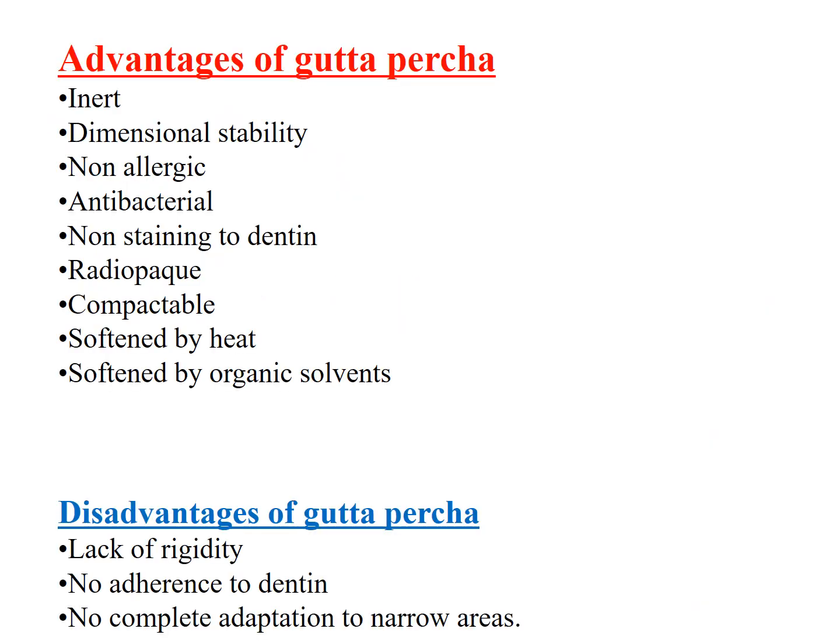Gutta-percha has many advantages: it is inert, does not have any cytotoxic effect, has dimensional stability, no allergy, and has certain antibacterial properties especially when impregnated with antimicrobial agents. It does not stain dentin, it is radiopaque, we can compact it, it gets softened by heat, and it softens by organic solvents.